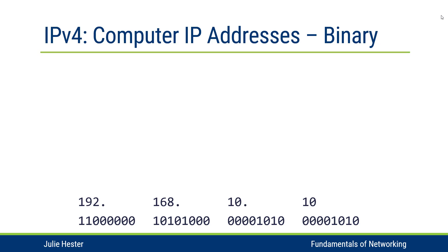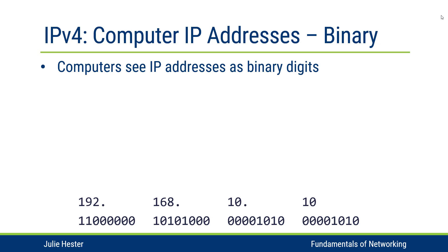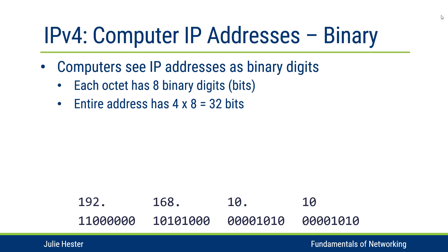Computers often communicate with each other using IP addresses. When we look at an IP address as a human, we see the decimal form, written as four decimal digits in dotted decimal notation — we take the four values and separate them with periods. But what the computer is really seeing is the binary equivalent to each of these four decimal numbers. Each of the octets has eight binary digits, and the entire IP address is made up of 32 bits grouped into four octets.